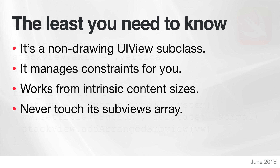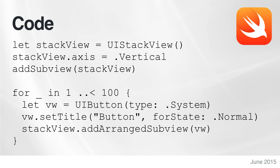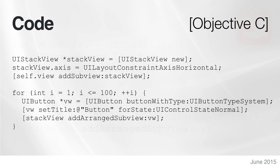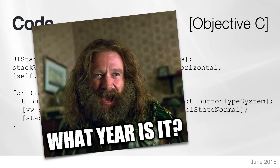If you want to use UIStackView, here is some Swift code to get you started. We create a stack view, make it vertical so things flow downward, and add it to our current view. Then it loops from 1 to 100 creating UIButtons, and calls addArrangedSubview — that's how you add a subview to a stack view. You do not use addSubview, because that's touching the subviews array directly, which you do not do. addArrangedSubview will add it to the subviews and also update the constraints, optionally with animation. If you want the code in Objective-C, here you go — but quite frankly you should really be questioning your life choices, because Swift is where it's at.